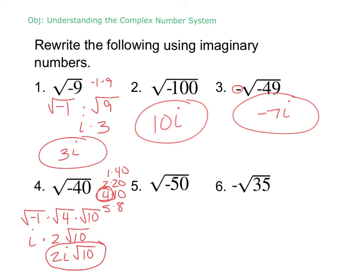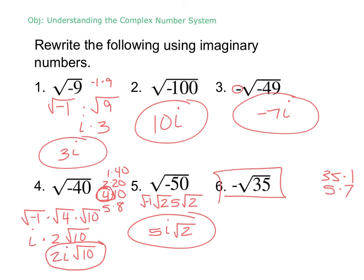Pause and try number 5. What perfect square goes into 50? 25 times 2. Square root of 25 is 5. Square root of 2 we can't do. And then we have that square root of -1, so that gives us our i. And number 6. Would that be i√35? 35 doesn't simplify. It's 35 times 1 and 5 times 7. There's no perfect square. This is a trick question. You can't simplify that. It's just -√35. Don't overthink it. You're only putting the i when the negative is inside the square root. That negative is not inside. It's outside.